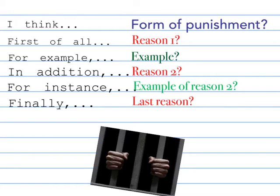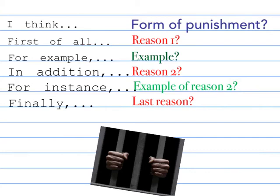My next sentence is the reason for choosing jail time. Why did you choose jail time? You can start your second sentence with 'first of all' and give your reason. Then we move on to giving an example. Start your third sentence with 'for example' and give an example of your first reason. After your example, give your second reason for choosing jail time — start your fourth sentence with 'in addition.' Now you are ready to give another example. Start your second example with 'for instance.' For instance means the same as for example.